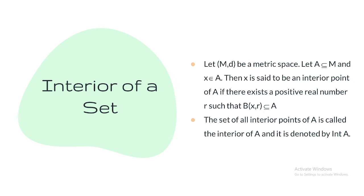Having defined the open ball and open set, we now define the interior of a set. Given a metric space M with A as a subset of M, and a point x in A: x is called an interior point if there exists an open ball B(x, r) that is entirely contained in A. If B(x, r) is not contained in A, then x is not an interior point. The set of all interior points is called the interior of A, denoted Int(A) or A°.